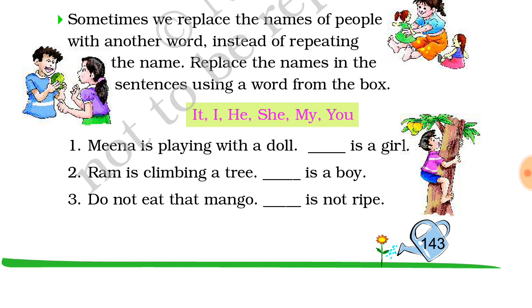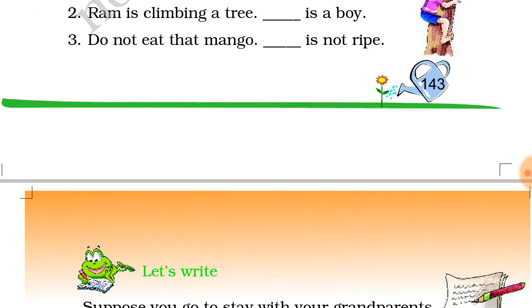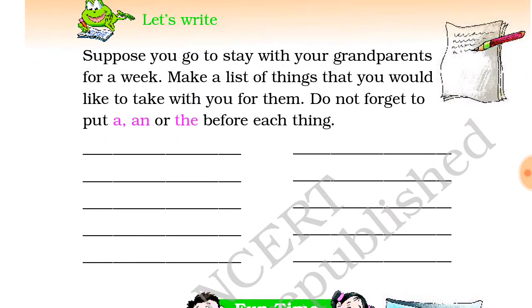Next, what is it? We have pronouns: I, he, she, my, you. We need to fill them in. For example, for a boy — 'Do not eat that mango, it is not ripe.' For living beings such as human beings, when there is a girl in English we use 'she,' and for a boy we use 'he.'